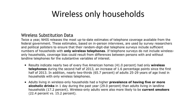Just a final word on wireless-only households — that probably includes most of the people in the classroom today. Coverage bias can certainly result from not including wireless-only households in telephone surveys. We know there are probably characteristics of wireless-only households that are different from households that have a landline. For example, wireless-only households are more likely to have higher alcohol use and be current smokers. So if you don't include wireless households, this is obviously going to be a major source of bias.